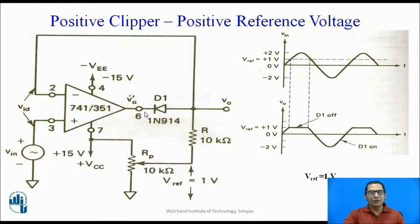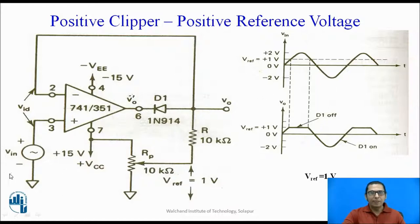This is a waveform for the circuit. Let us assume that we are applying a sinusoidal signal of plus 2 and minus 2 volts, that is 4 volts peak to peak, to the input of the op-amp at the non-inverting terminal. This analysis can be made by considering two half cycles: the positive half cycle and the negative half cycle. Let us understand what happens during the positive half cycle.